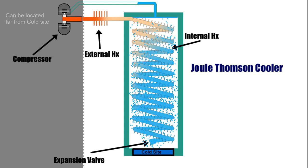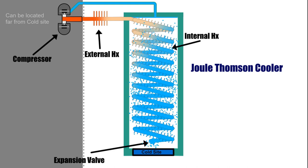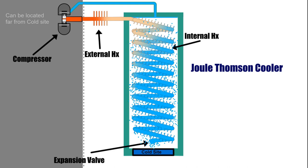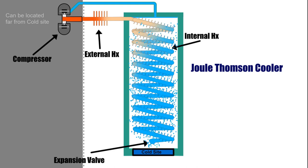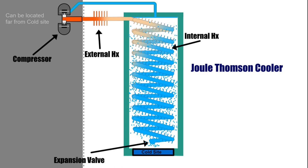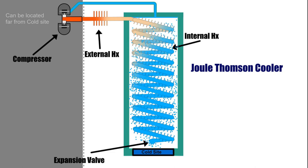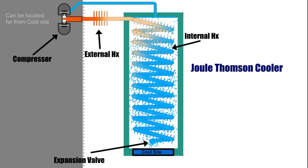The internal heat exchanger exchanges heat between the high pressure incoming gas and the cold low pressure chamber after the cold plate. This makes the Joule-Thompson Cooler more efficient. The incoming warmer high pressure gas is pre-cooled by the cold low pressure chamber. This will allow the low pressure gas after the expansion valve to be even colder.